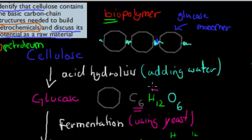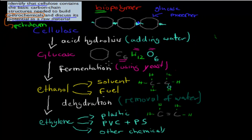It has hydrogens and oxygens. I'll show you how we go from glucose to ethanol and ethylene, which are the two major components that make up petrochemicals. If we have glucose, we can use a process called fermentation — using yeast — to produce ethanol.